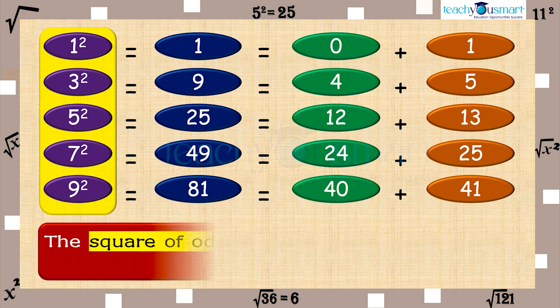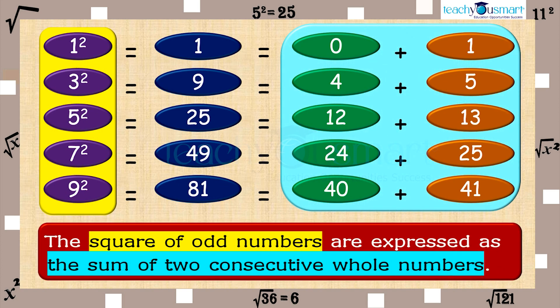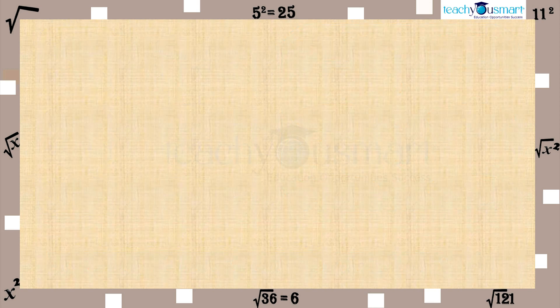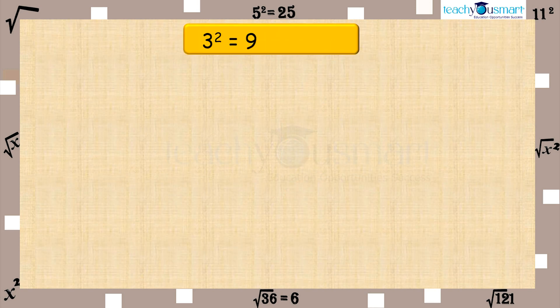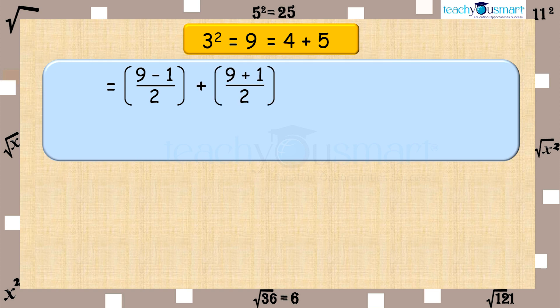The squares of odd numbers are expressed as the sum of two consecutive whole numbers. In this pattern, 3 square equals 9, which can be written as 4 plus 5. We can express 4 as (9 minus 1) divided by 2 and 5 as (9 plus 1) divided by 2.